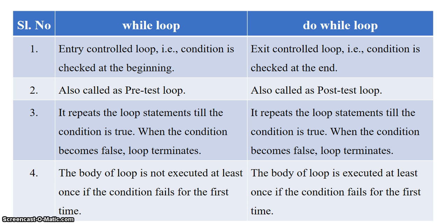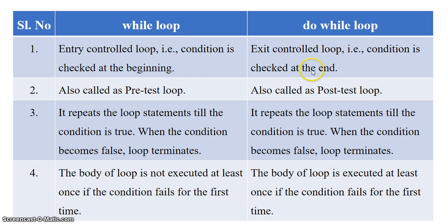The differences between while loop and do-while loop are as follows. While loop is also called as entry control loop because the condition is checked at the beginning, whereas in do-while loop the condition is checked at the end, so it is an exit control loop. As the condition is checked at the beginning, while loop is also called as pre-test loop, and do-while loop is called as post-test loop.